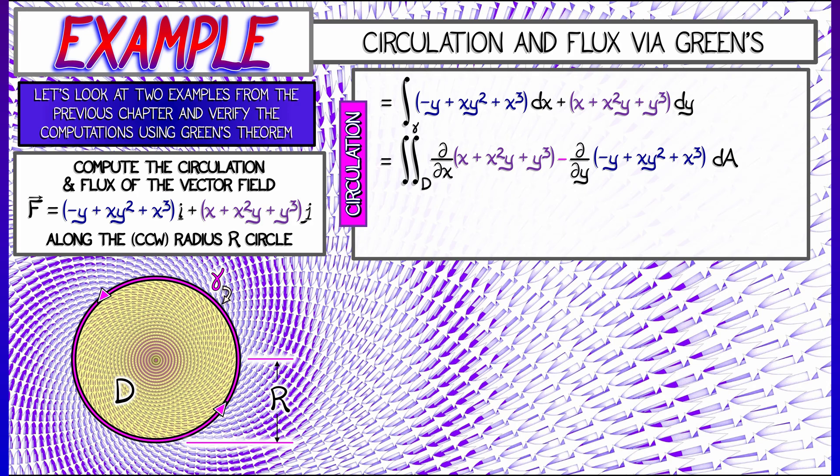Doing those partial derivatives gives us, for the first term, 1 plus 2xy, and then subtract off that second partial derivative, negative 1 plus 2xy. Those 2xy's cancel. In the end, you get the area over this disk d of 2. With respect to area, that's twice the area. That's 2 pi r squared.